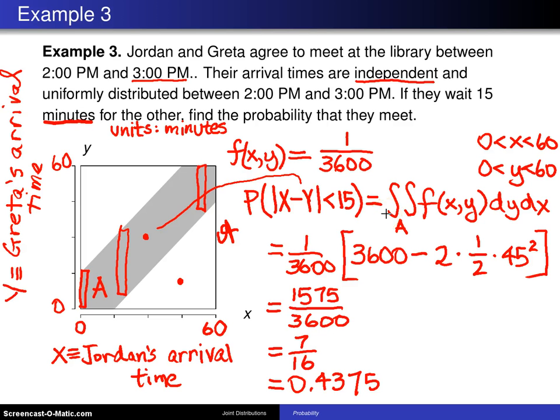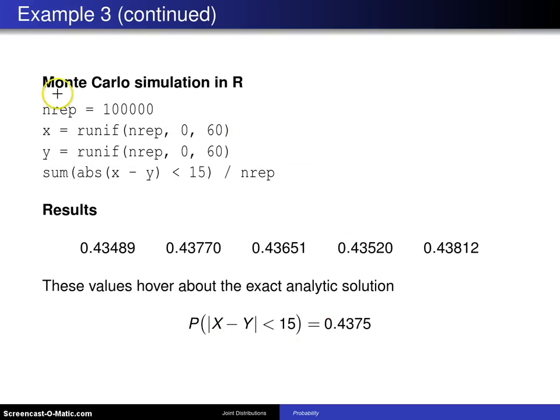So for the Monte Carlo simulation we're going to do 100,000 replications. X in this case will be Jordan's arrival time measured in minutes after 2 o'clock, and that is going to be 100,000 of his arrival times between 0 and 60 minutes. Y here will be some independent uniforms, 100,000 of them, and those will be Greta's arrival time.